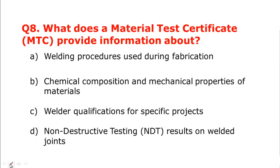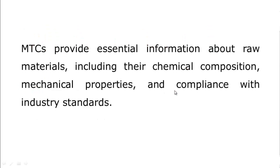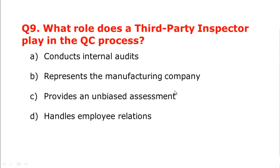Question number eight: what does a material test certificate (MTC) provide information about? An MTC provides the chemical composition and mechanical properties of the material, as well as details like heat number and mark number. It is used to verify the chemical composition and mechanical properties of the material and its compliance with industrial standards.